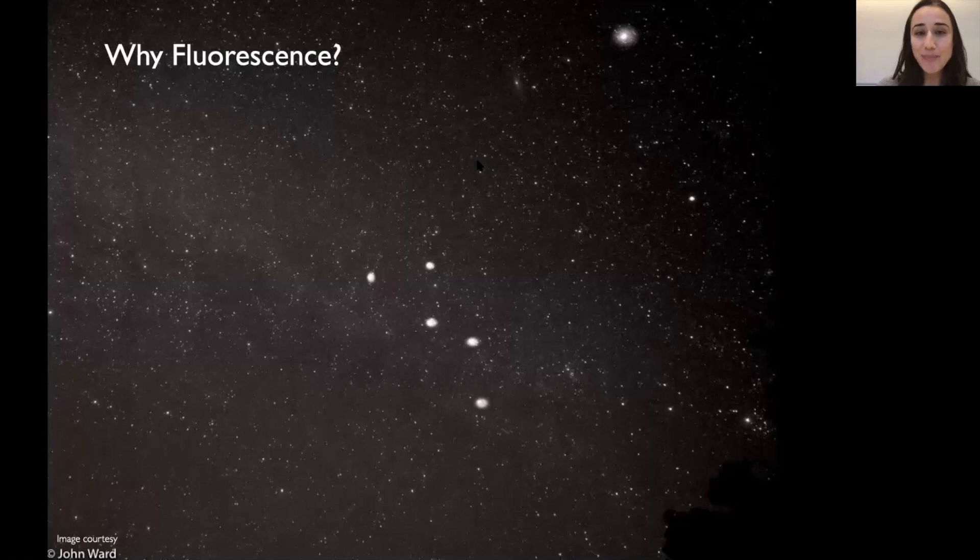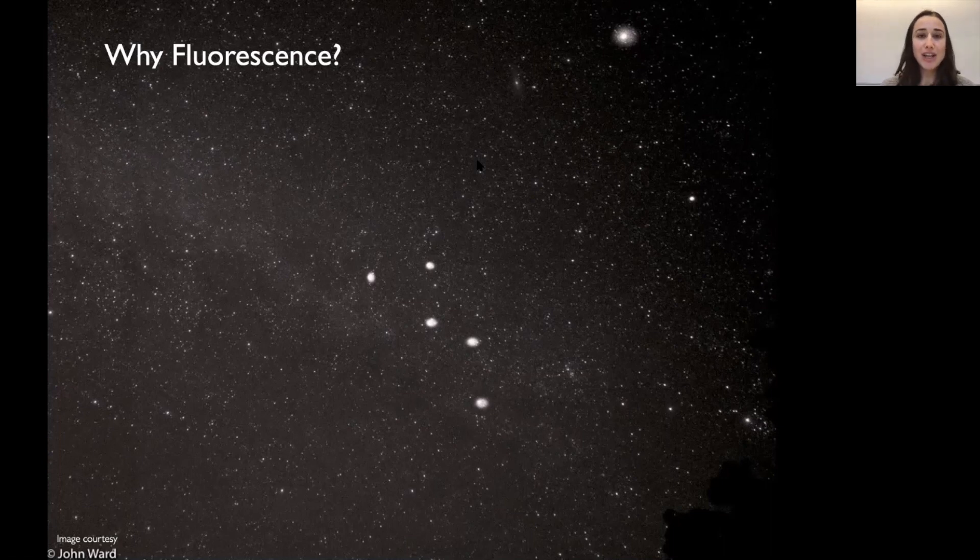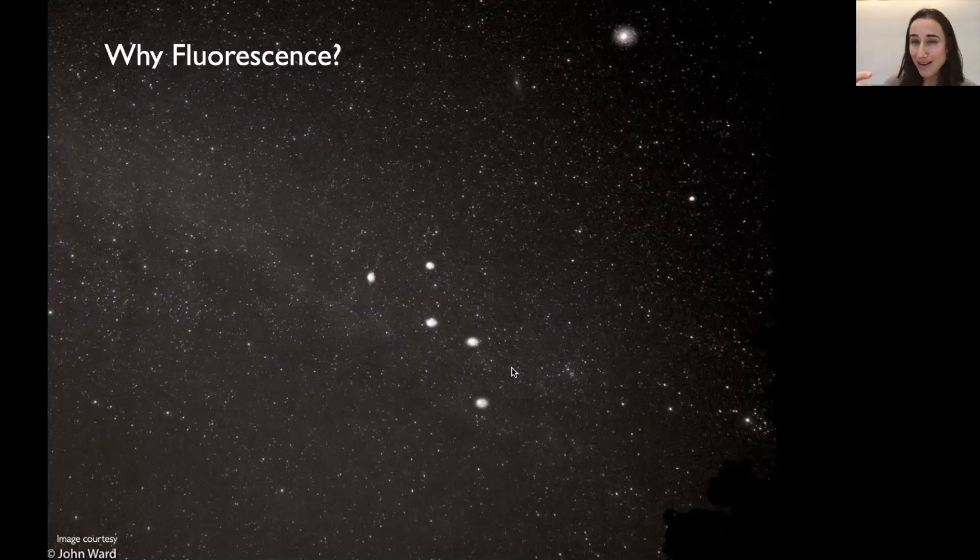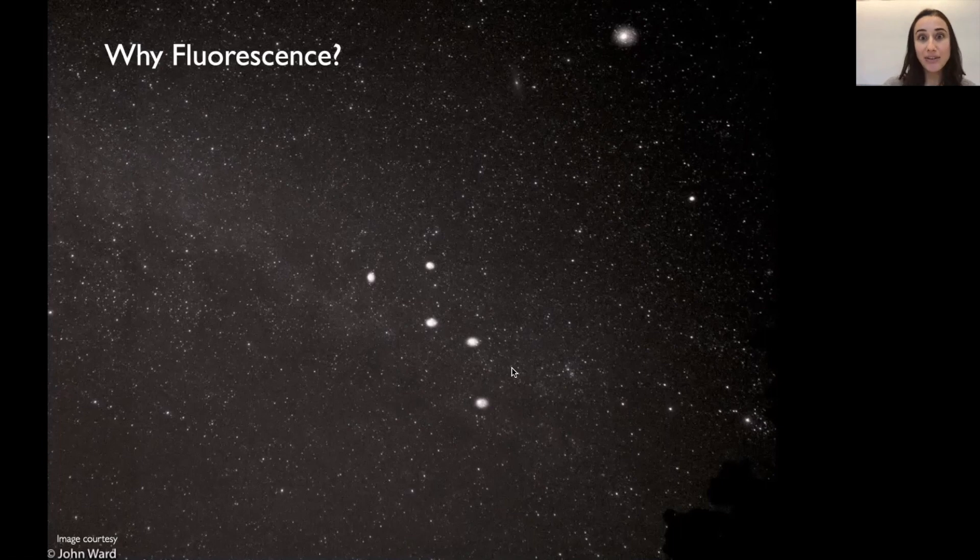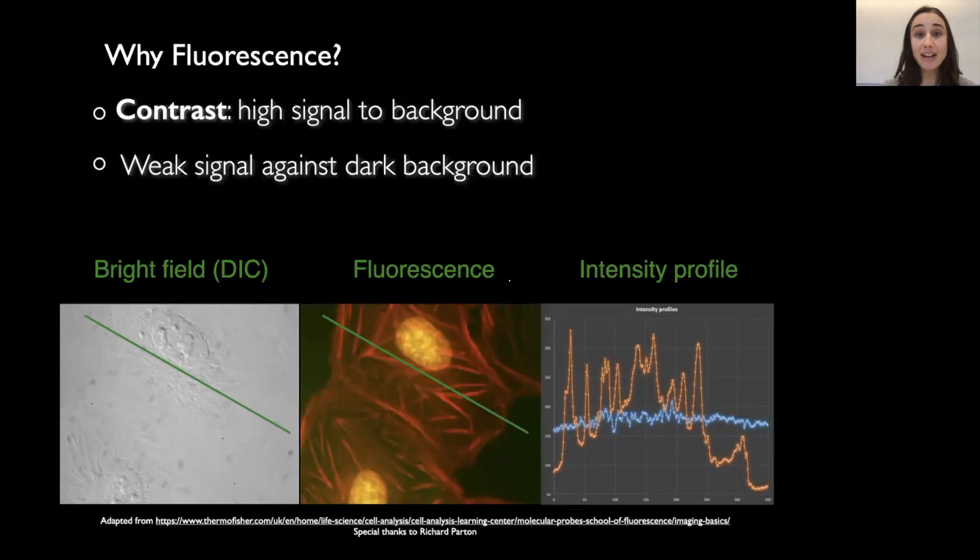So why do we use fluorescence? Well, it's quite intuitive. If you want to look at the sky, you better go to the middle of the countryside. In the middle of the city, you will not see as well, for example, the Andromeda galaxy or Cassiopeia constellation. You need to go to the middle of the countryside where you have much less background in the sky, much less light, so then you can see very nicely the stars. And this is because we can have much better contrast. So fluorescence images have a very good contrast because there is a high signal compared to lower background. And therefore, we can see quite well our structures compared to, for example, bright field images, as we can see here on the left.